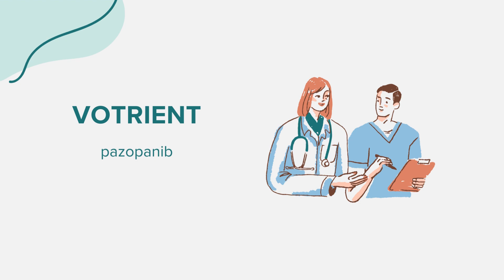Votrient can interact with other medications. It's crucial to inform your doctor about all medications, supplements, and herbal products you're currently taking. Specifically, avoid grapefruit products and certain antacids and stomach acid reducers while on Votrient. Votrient is not a cure for cancer, but it can increase progression-free survival and can shrink or slow the growth of kidney cancer in some individuals. It's not an immunotherapy medicine but is considered a targeted drug therapy used to treat cancer. Votrient helps slow down the growth of blood vessels that feed tumor growth.